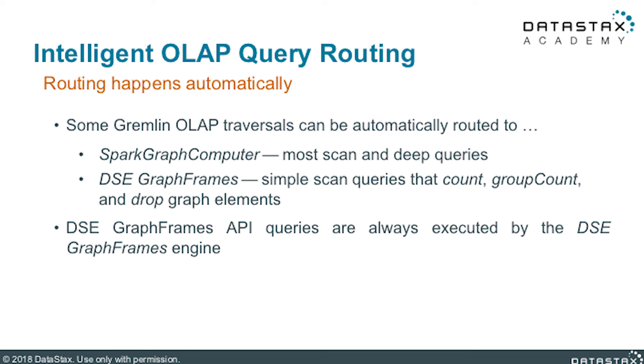Currently, Intelligent OLAP query routing works for count, group count, and drop queries that involve no more than three hops, and use steps like has, has label, out, in, both, and out in. The feature will keep evolving, so always check the documentation for the most recent list of requirements. Intelligent Analytics query routing is an automatic optimization feature implemented as a DSC Graph frame interceptor strategy. Therefore, if for any reason you need to disable rerouting for a particular traversal, it is quite easy to do by disabling this strategy.